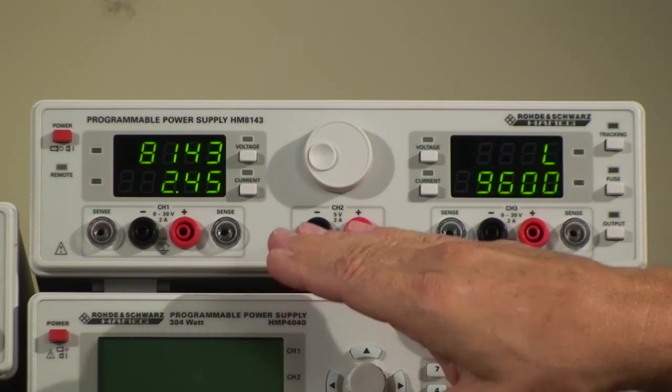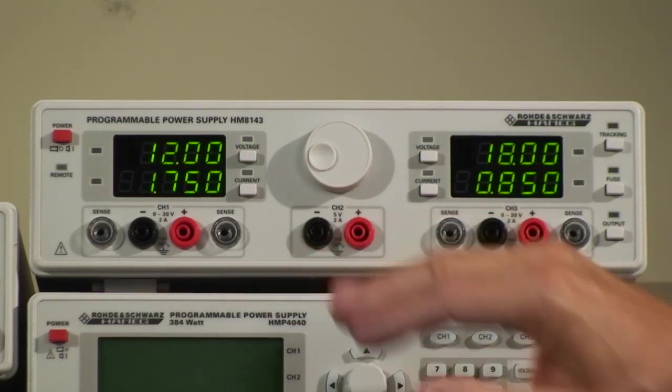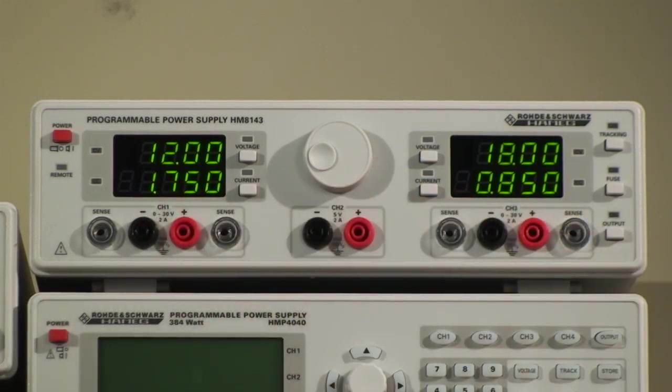It gives us a 5V 2A supply in the middle for the TTL circuitries. And then we have two independent power supplies, 0-30V and again 2A.